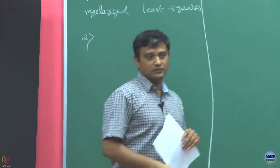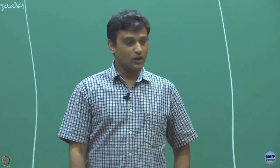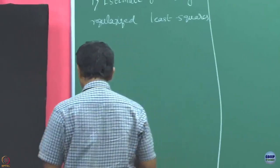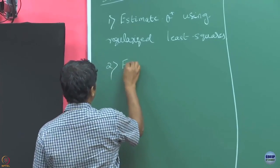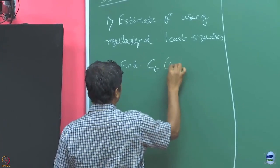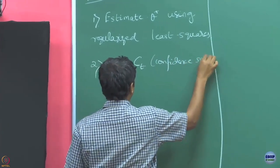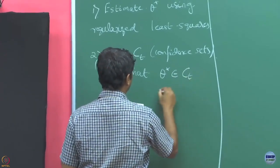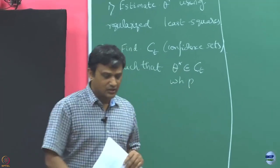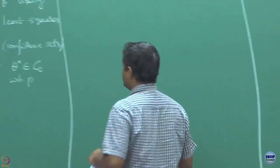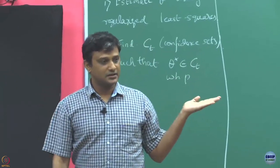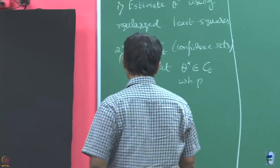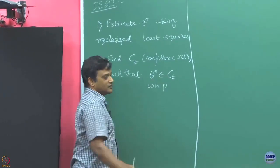The second part is we assume that we will be able to find confidence sets in every round such that my theta star belongs to that confidence set with high probability. The first part — finding the estimate given observations — is easy using regularized least squares. The main question is how to find this confidence interval so that theta star belongs to it with high probability.